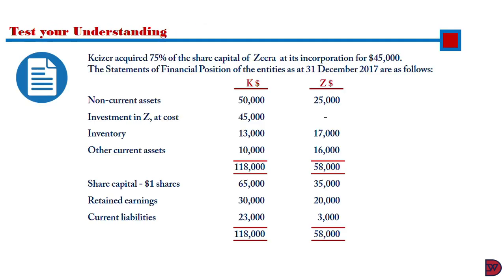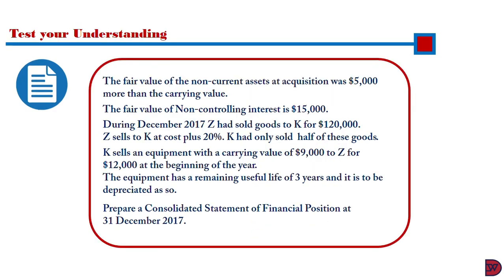KESA acquired 75% of the share capital of Zira at its incorporation for $45,000. The statement of financial position of both entities as at 31st December 2017 are as follows: non-current assets for both entities, investment in Zira at cost, inventory, and other non-current assets — giving a total asset of $118,000 for KESA and $58,000 for Zira. Share capital, retained earnings, and current liabilities are also stated, with total equity and liabilities of $118,000 for KESA and $58,000 for Zira. The fair value of the non-current asset at acquisition was $5,000 more than book value, so a fair value adjustment is required. The fair value of the non-controlling interest is $15,000.